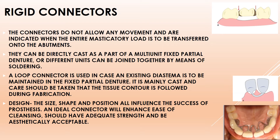Rigid connectors do not allow any movement and are indicated when the entire masticatory load is to be transferred onto the abutments. If the abutments are strong enough to bear all the masticatory load, rigid connectors are used. They can be directly cast as part of a multi-unit fixed partial denture, or different units can be fabricated separately and joined by soldering.